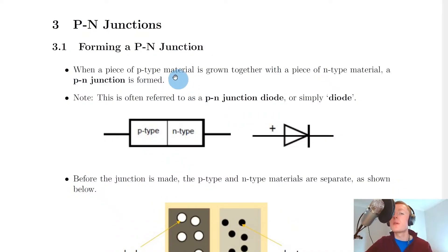Before we look at the process of forming a P-N junction, we need to look at what a P-N junction actually is. When a piece of P-type material is grown together with a piece of N-type material, a P-N junction is formed. Remember, the P-type and N-type just refers to how that material has been doped.